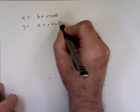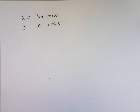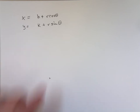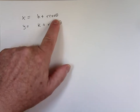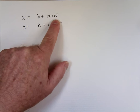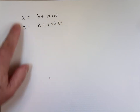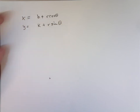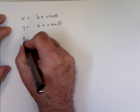So here's the deal. When you have these trig functions involved in these parametrically defined functions, the usual strategy is to isolate those trig functions and then take advantage of trig identities to eliminate the parameter, as opposed to solving for the parameter theta. But what you could do is subtract H and divide by R.